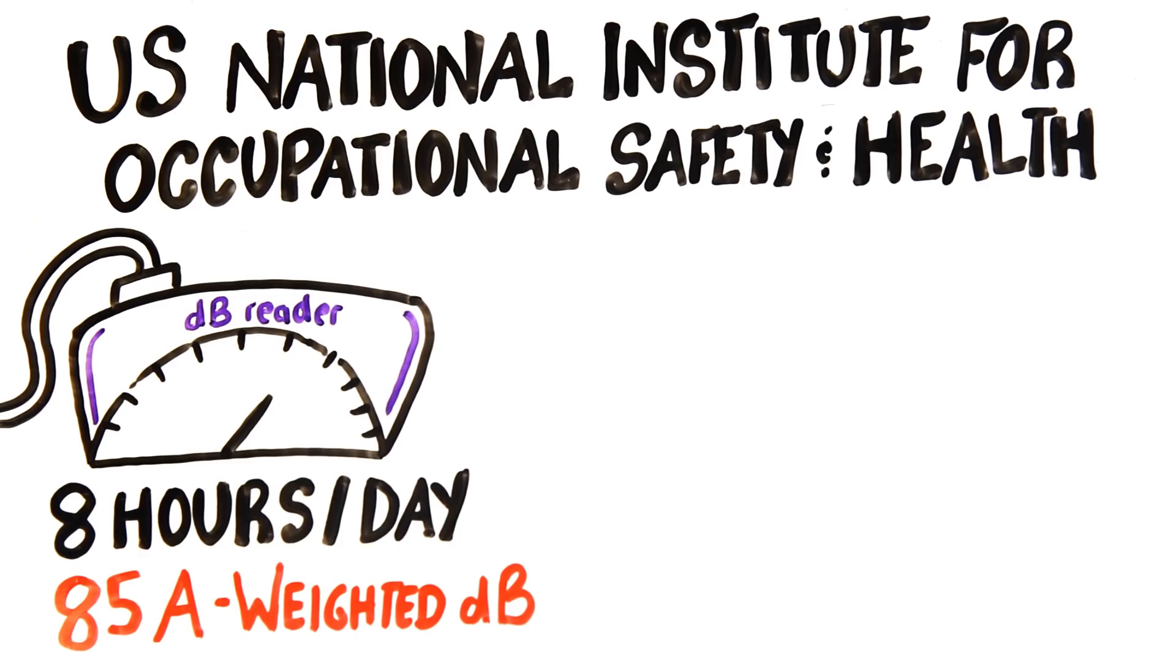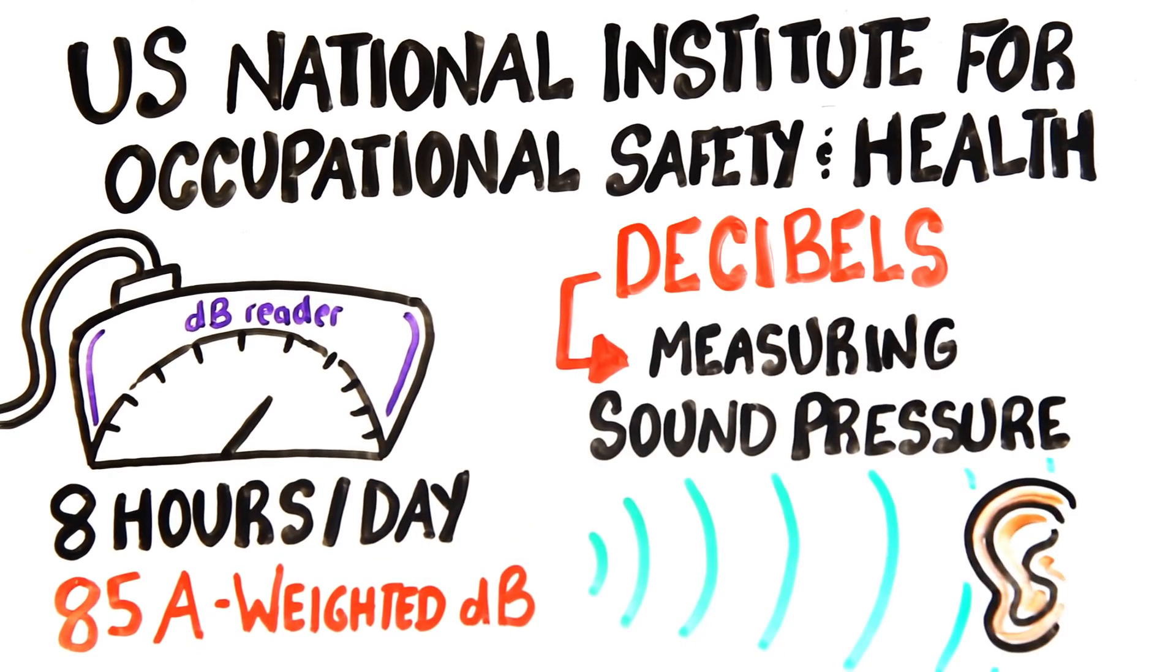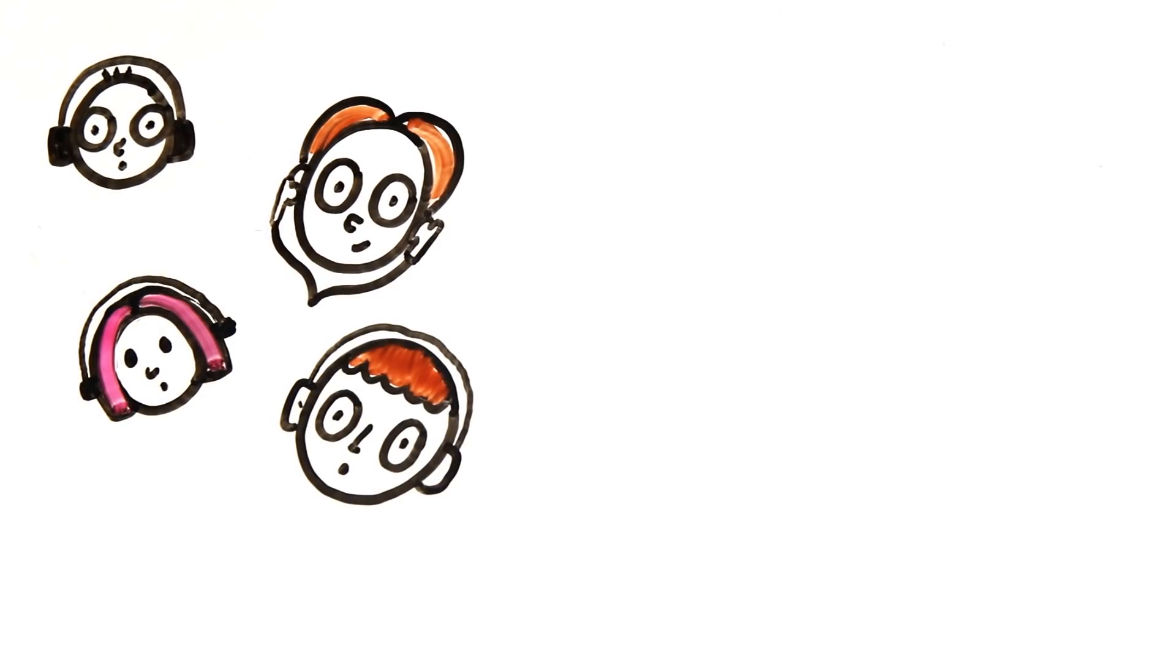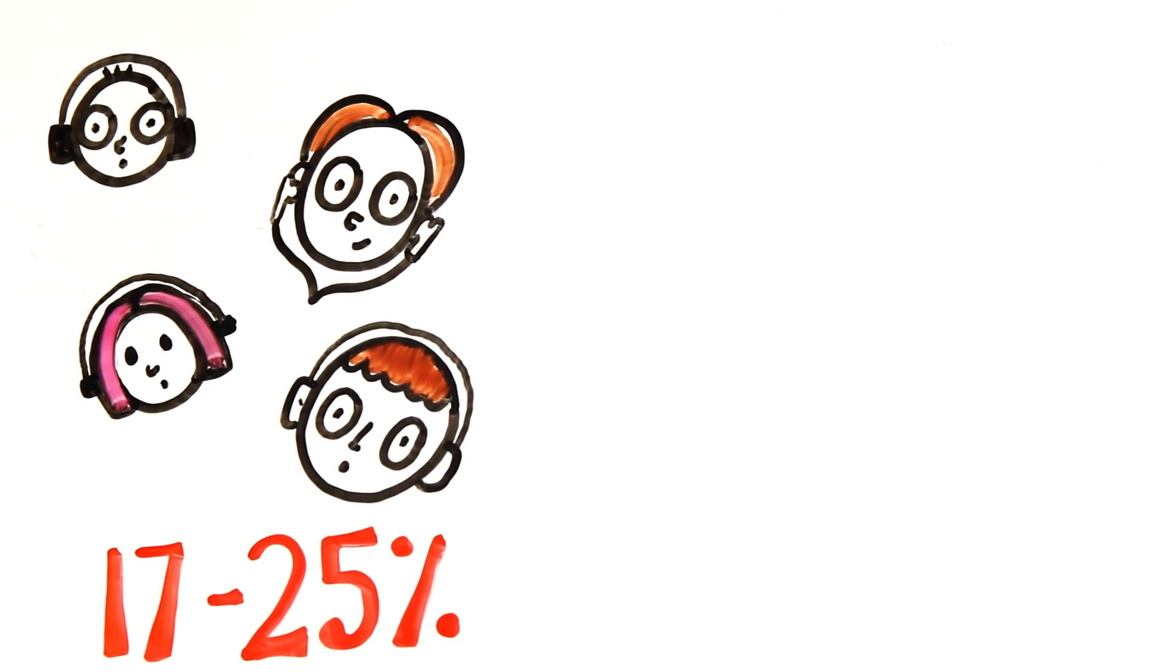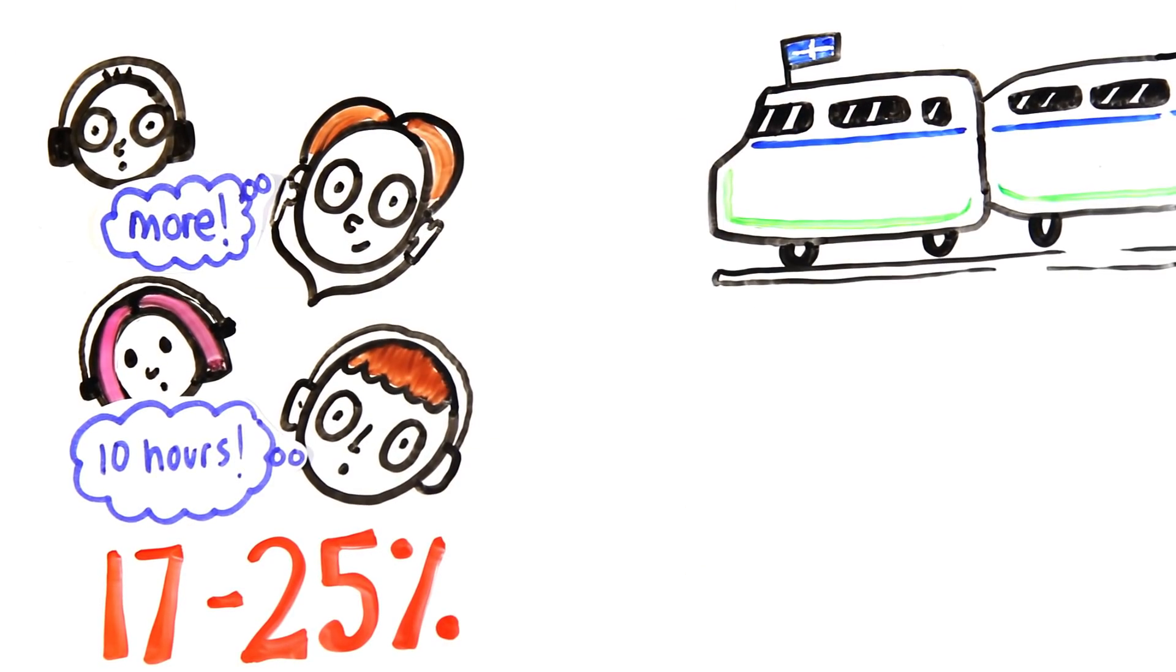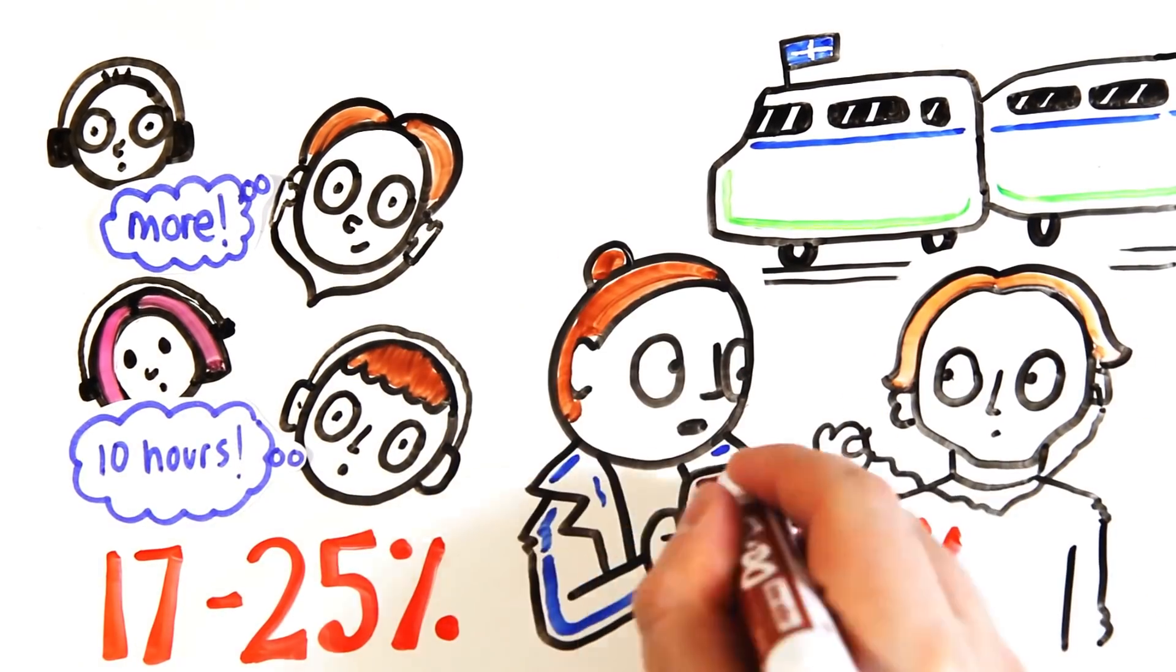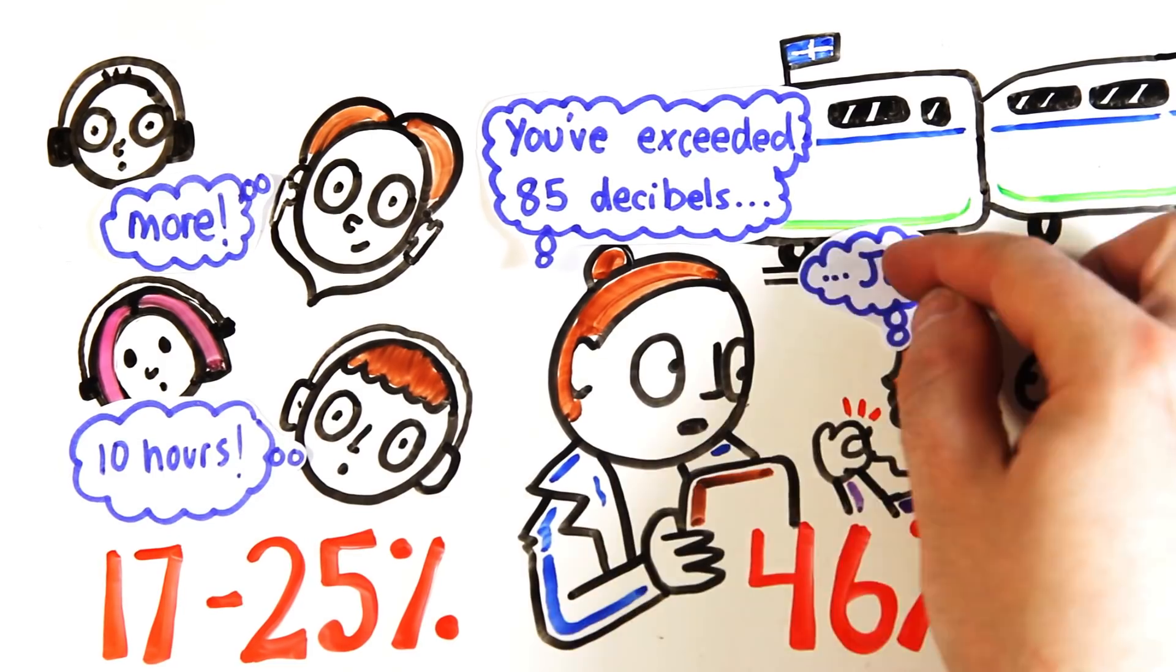A-weighted decibels, which from now on we are just going to call decibels, is a measurement of sound pressure in regards to the human ear. Eight hours seems like a lot of time to be wearing headphones daily, but a survey found that 17 to 25 percent of people actually felt they listened to their headphones for longer than eight hours a day. And when randomly stopping people at a train station in Sweden, another study found that 46 percent of participants were exceeding 85 decibels of sound from their headphones. This meant their ears were at risk.